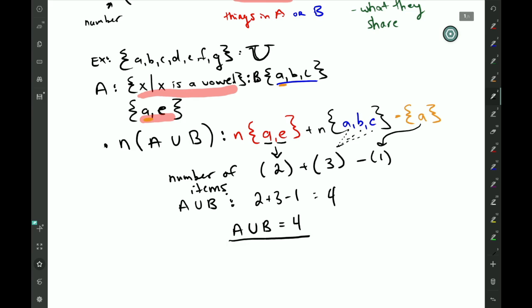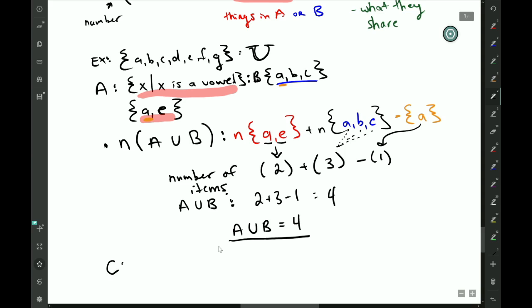Simply put, say they have nothing in common. So using our same universe and sets, let's introduce set C. Let's say that it are letters d, e, and f.